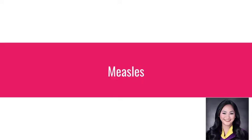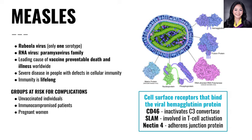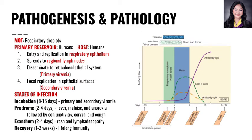Measles, also known as the rubeola virus, has only one serotype. It is the leading cause of vaccine-preventable death and illness worldwide, and its immunity is lifelong. Its mode of transmission is respiratory droplets. It disseminates to the reticular endothelial system and produces focal replication in the epithelial surfaces. In the exanthem stage, we have the rash and lymphadenopathy in two to four days.